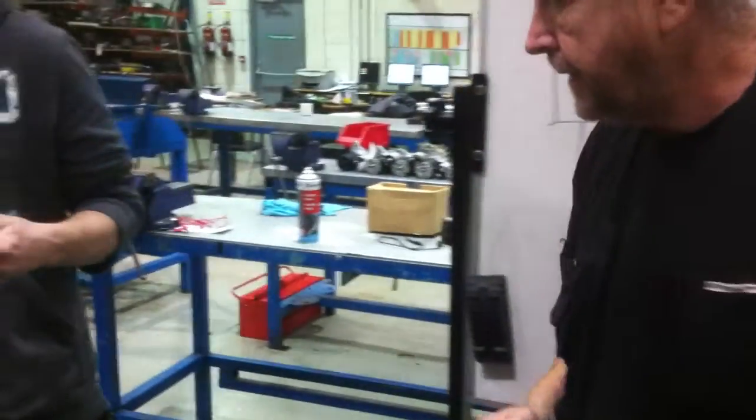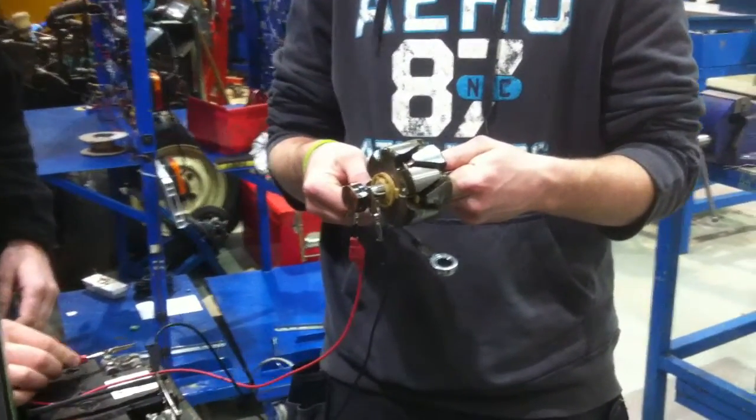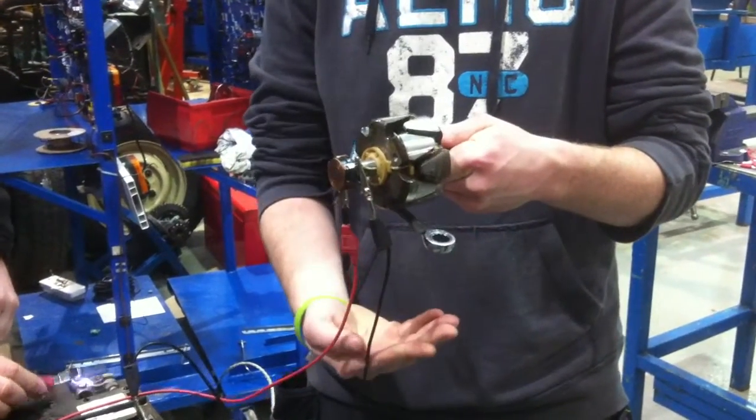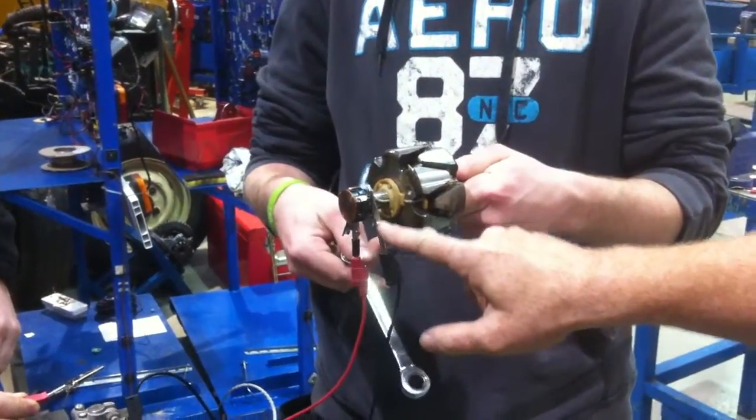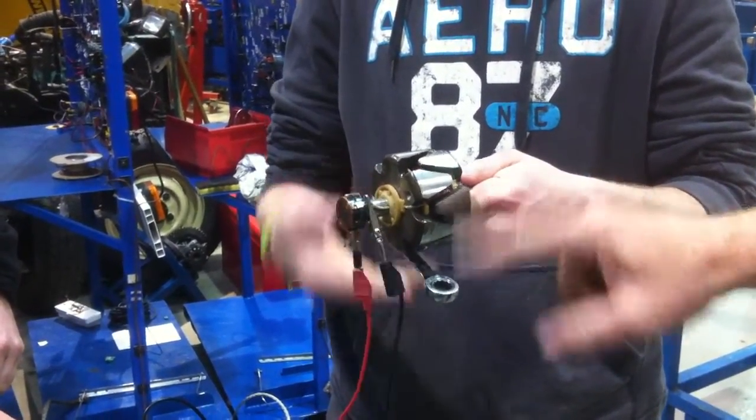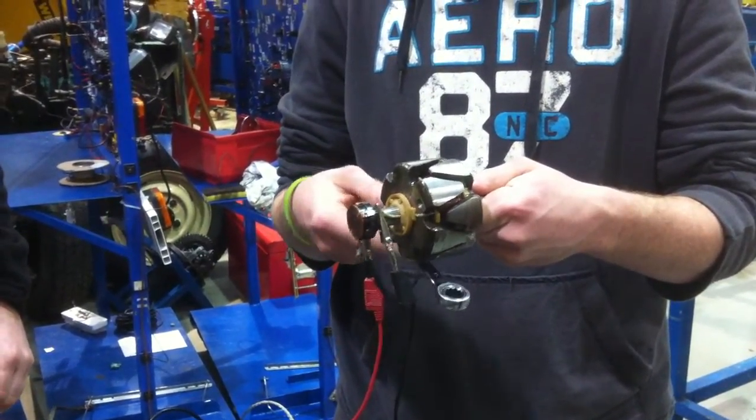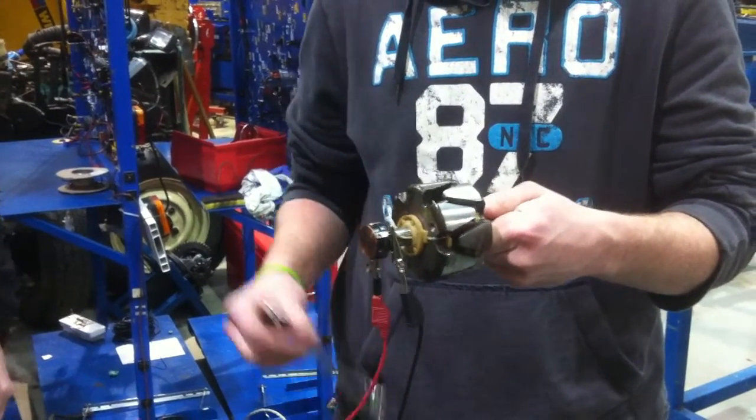Here's the magnet that we use in the Lucas alternator. So you can see there, all we're simply doing is passing electricity through one end of the wire, and back out the other. And every time we do that, we actually make an electromagnet.